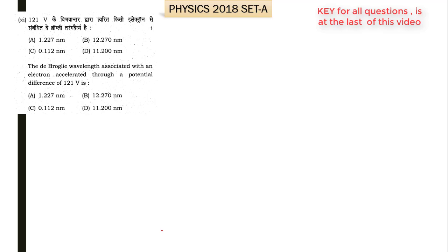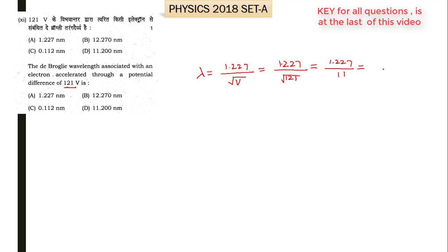The eleventh part asks: the de Broglie wavelength associated with an electron accelerated through a potential difference of 121 volts is? The formula is λ = 1.227 / √V nanometers. With V = 121 volts, √121 = 11, so λ = 1.227 / 11 ≈ 0.112 nanometer. So C is the right option for the eleventh part of question number 1.